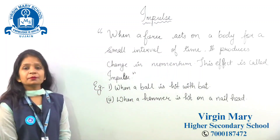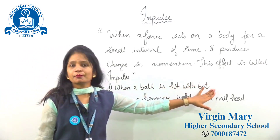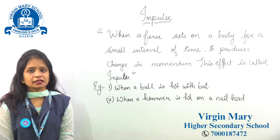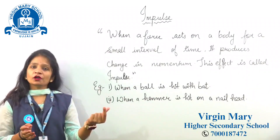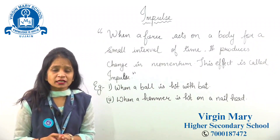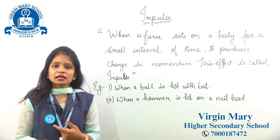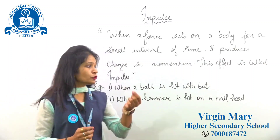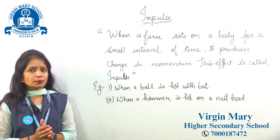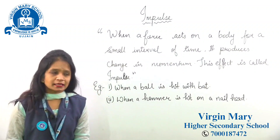For example, we have written here: when a ball is hit with a bat. When you hit the ball with the bat, the contact between the bat and the ball is for a very small time, but the bat exerts a large amount of force. So this example is called impulse, because you have a large amount of force in a small time.